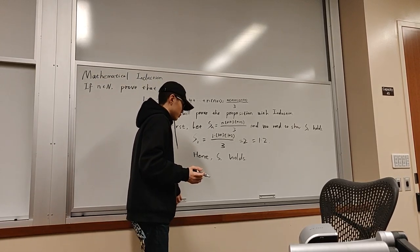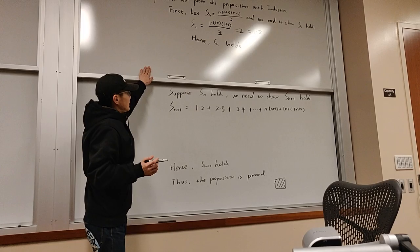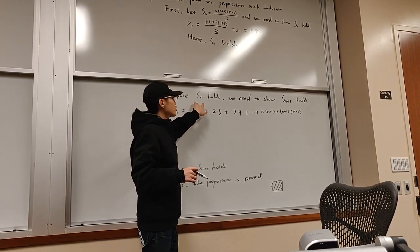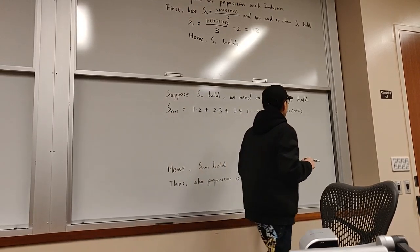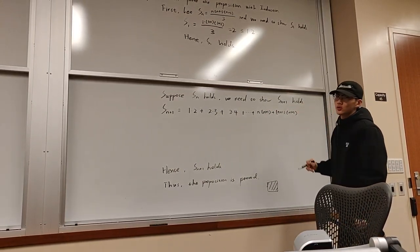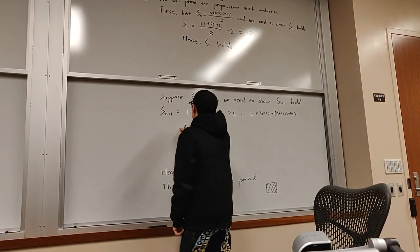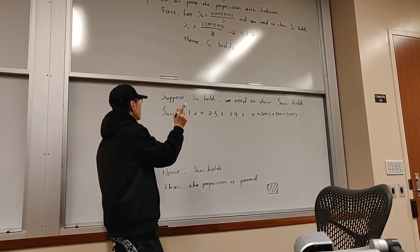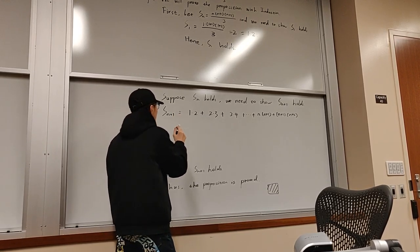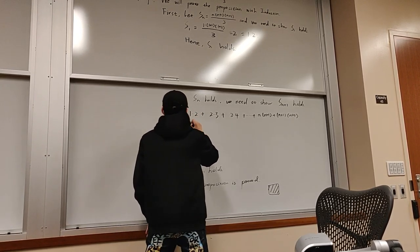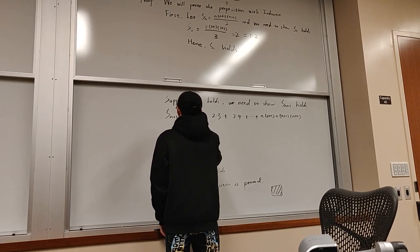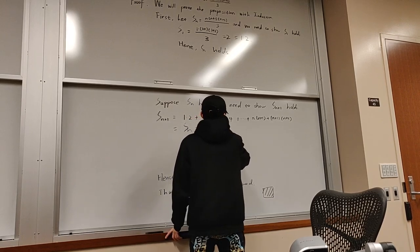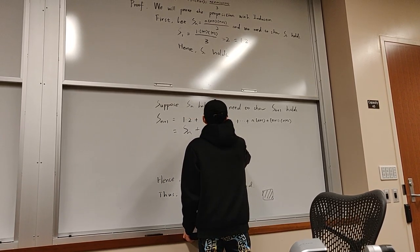Okay, let's go to the next step. We suppose S(k) is true, and we need to show S(n+1) is also true. Here is our S(n+1). Since we suppose S(k) is true, so S(n+1) equals S(n) plus this next term.